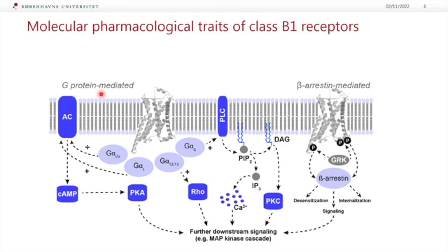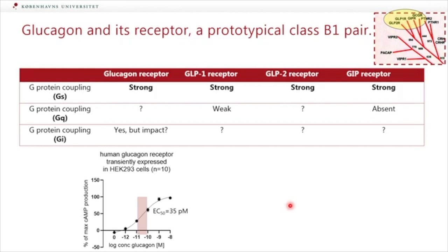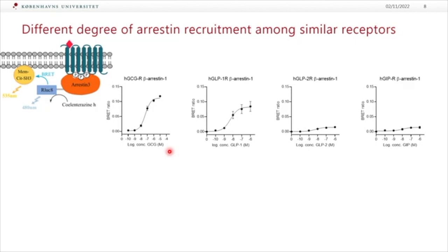Looking at the basic properties of these class B1 receptors, they are all GS-coupled. Some of them might also be GQ and GI-coupled to a certain extent. If we compare those four receptors, they are all very strongly GS-coupled, and if we look at their potencies, we are most often in the 2 picomolar range — really high potency. There are some reports about GQ coupling for the GLP-1 receptor, which could be important during type 2 diabetes, and crystal structures showing GI coupling of the GLP-1 receptor, but we don't know what that means.